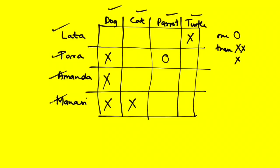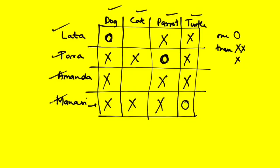Tara owns a parrot, so I put a circle there. This column has already got three X's, so I put a circle for the remaining row. This row already has a circle, so I put crosses for the rest. Since there are three crosses in a row, the remaining cell gets a circle. Working through the elimination, the final conclusion is: Latha owns a dog, Tara owns a parrot, Amanda owns a cat, and Manasi owns a turtle.